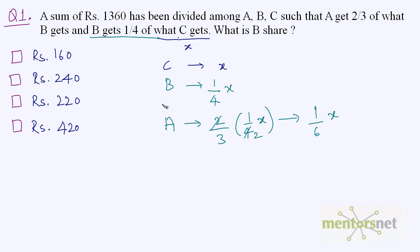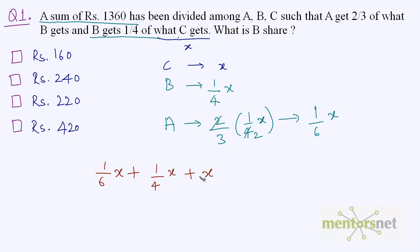So we know A, B, and C's shares in terms of X, and we have been given the total sum which is 1360. If we add all these shares of A, B, and C we get 1360: one-sixth X plus one-fourth X plus X equals 1360.